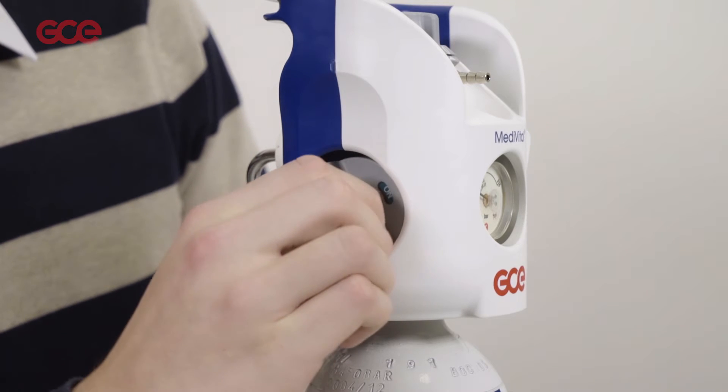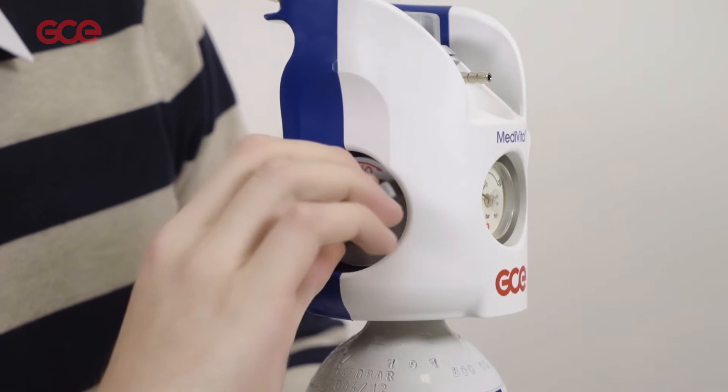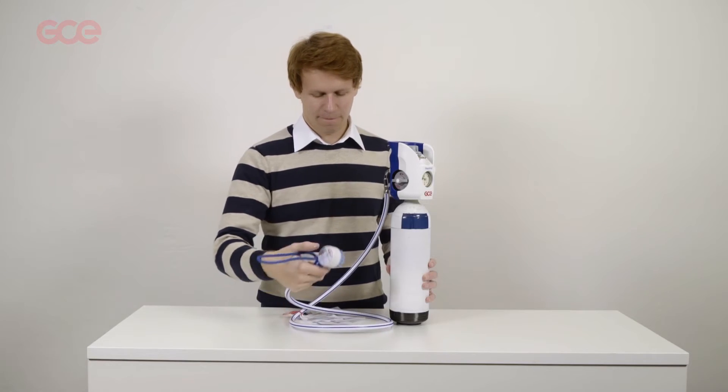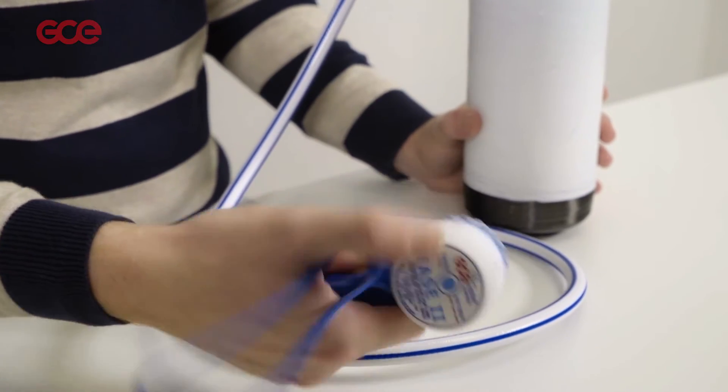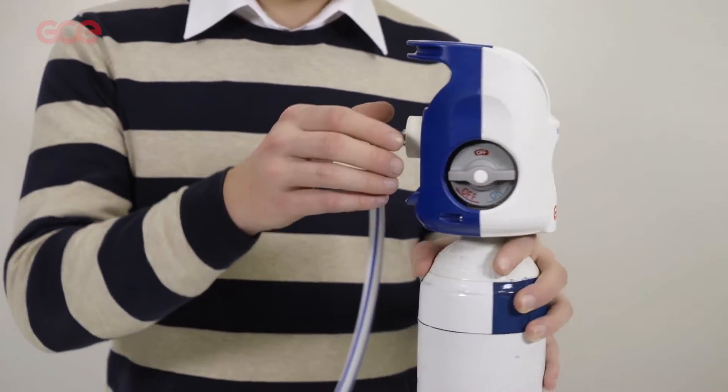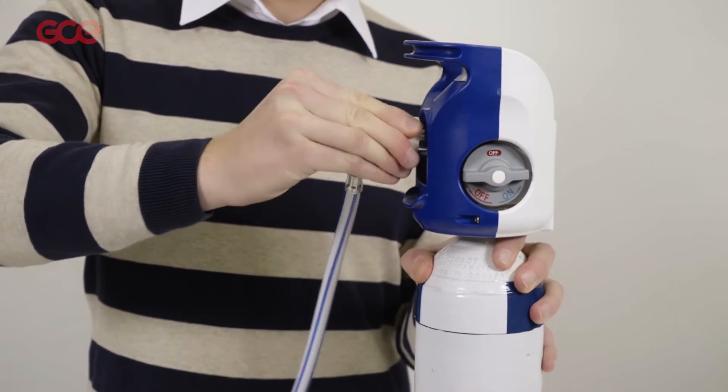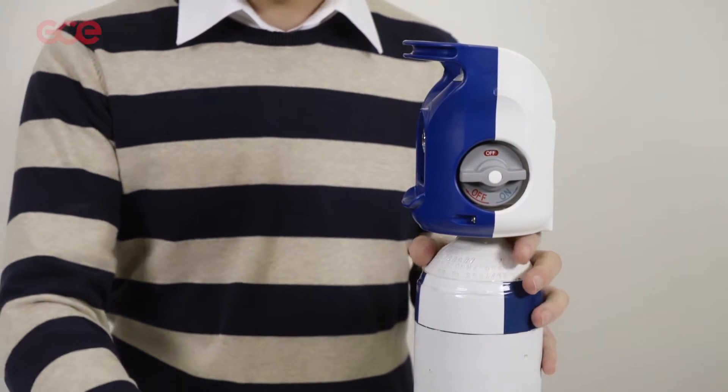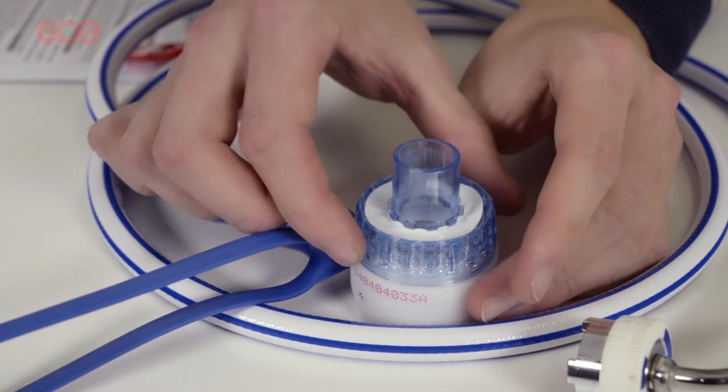When the administration of gas has been completed, close the cylinder valve and push the test button to depressurize. You can now disconnect the demand valve from the quick connector. Please proceed to dismantling before cleaning.